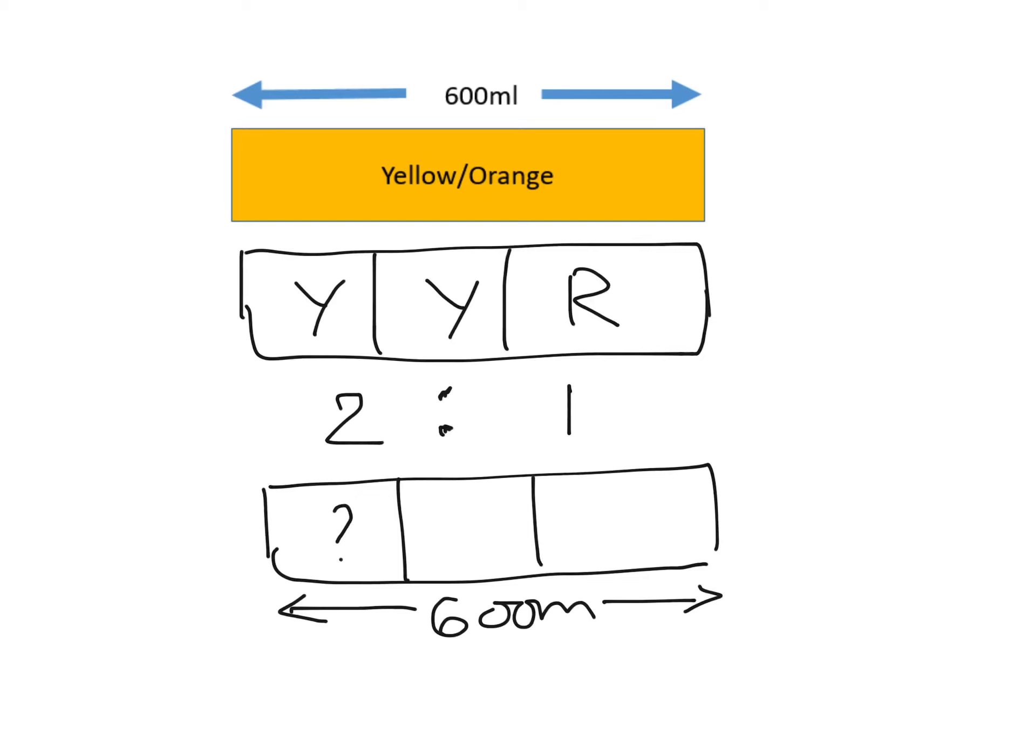How much is each section worth? So we need to have 600 ml divided by three equal amounts which will be 200 ml. So this one is worth 200, 200, and 200. So to be able to get 600 ml of yellow-orange paint, I need 400 ml of yellow and 200 ml of red.